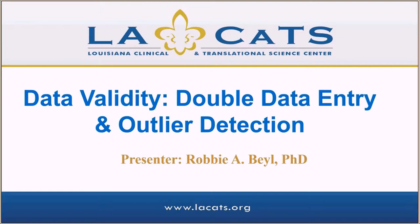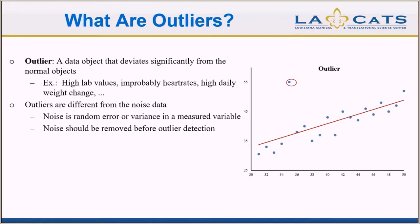Now that we've talked about double data entry, we're going to take a step forward and back and talk about outliers in general. Double data entry is one way to get around potential outliers. An outlier is simply a value that's not like the others — very Sesame Street, 'one of these things is not like the others.' Looking at the plot, most values follow some kind of linear trend over time, but there's one value in the top left corner that's different.